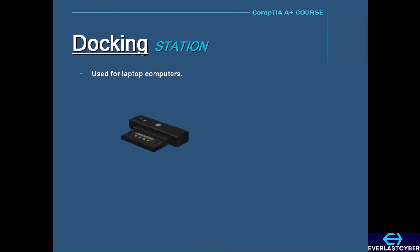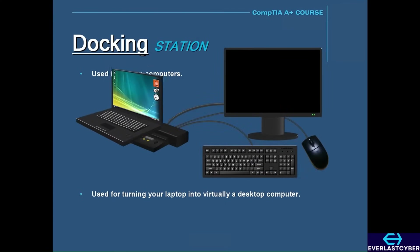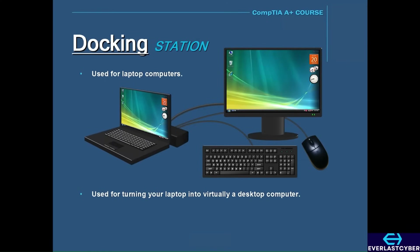A docking station is used for laptop computers to essentially turn your laptop into a desktop computer. Since laptops have smaller monitors and keyboards, you can set the laptop in the docking station and it will automatically connect to a bigger monitor, keyboard, mouse, printer, or whatever is already plugged in — eliminating the hassle of connecting everything individually. One important thing to remember is that docking stations are manufacturer-specific, so there is no one-size-fits-all solution; you need to get the specific one for your laptop.